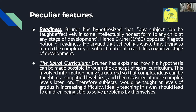The spiral curriculum involves information being structured so that complex ideas can be taught at a simplified level first, and then revisited at more complex levels later on. Subjects are taught at levels of gradually increasing difficulty — start with a simplified version, revisit and go deeper, revisit and go deeper again. This way, subjects will be taught at levels of gradually increasing difficulty.